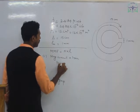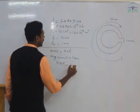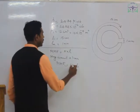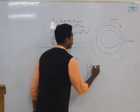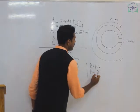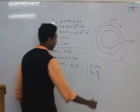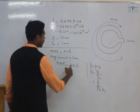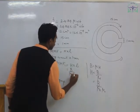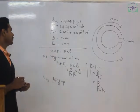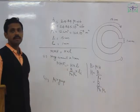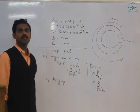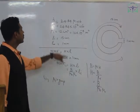The formula for MMF of iron is: MMF_iron = H × Lᵢ. Using the relation B = µ₀µᵣH, we get H = B / (µ₀µᵣ). Therefore, MMF_iron = (B / µ₀µᵣ) × Lᵢ. To find B, we use the relation B = φ / A, since φ and A are both given in the question.